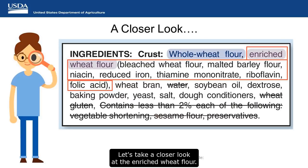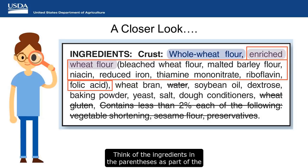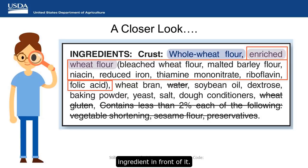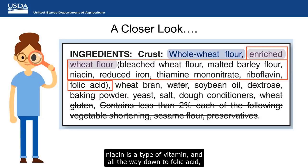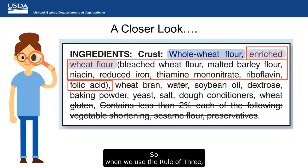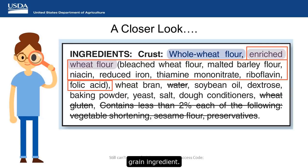Let's take a closer look at the enriched wheat flour. You may notice that it has a parenthesis next to it with a long list of ingredients that make up the enriched flour. Think of the ingredients in the parenthesis as part of the ingredient in front of it — the bleached wheat flour, the malted barley flour, the niacin, and all the way down to folic acid are all part of the enriched wheat flour. When we use the rule of three, the enriched wheat flour and everything in the parenthesis counts as one grain ingredient.